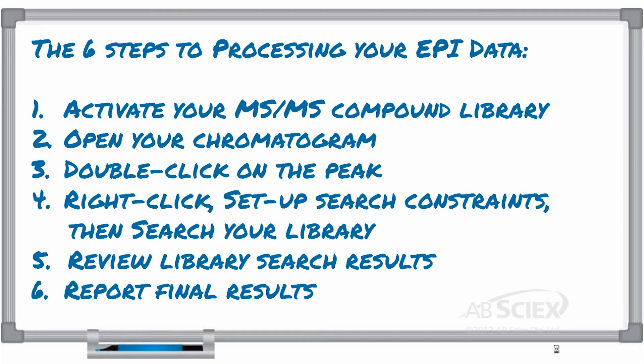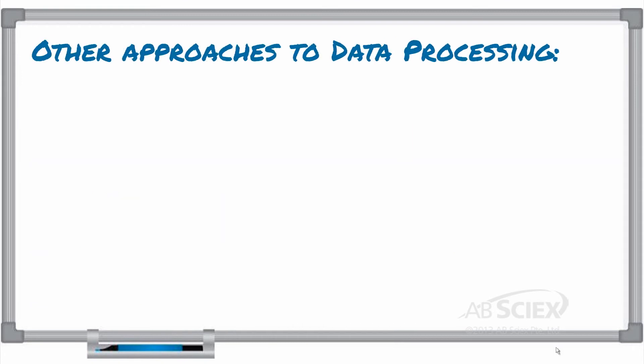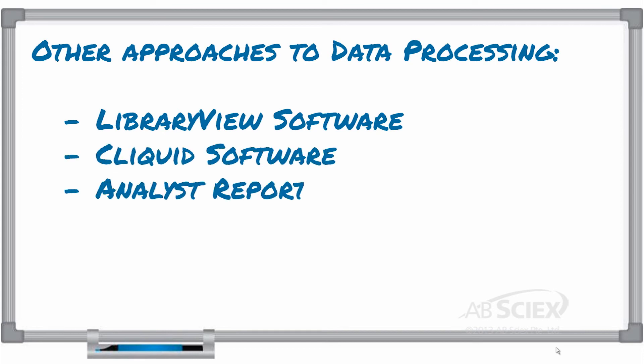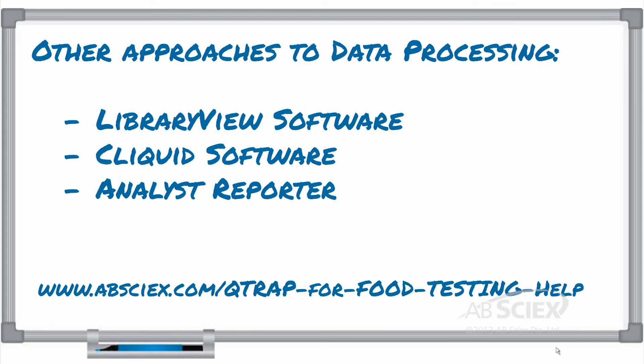The outcome of this data processing approach is better confidence in your results. You are able to ensure that your identification of that residue in your unknown sample is correct. Keep in mind that comparing EPI results to library spectra can also be done in other ABCYX software platforms, including LibraryView software, ClickWid software, and through Analyst Reporter. Go to ABCYX.com/QTRAP for food testing help to submit additional questions about data processing or to get support about alternative data processing approaches.